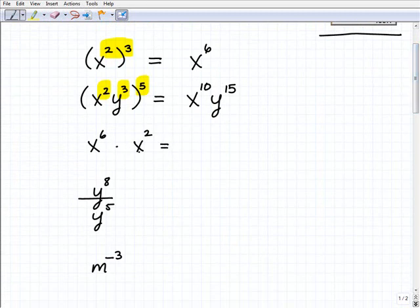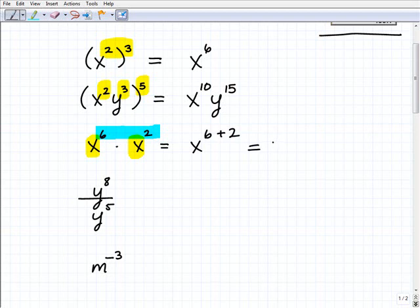How about this situation here? x to the 6 times x squared, right? Anytime you're multiplying something where you have the same base, in other words these parts of the power are the same, we do what? We add the exponents. So this would be x to the 6 plus 2 or x to the 8. Now we couldn't have done this if the bases were different. If I had x to the 6 times y squared, guess what? That's as simple as it's going to get.